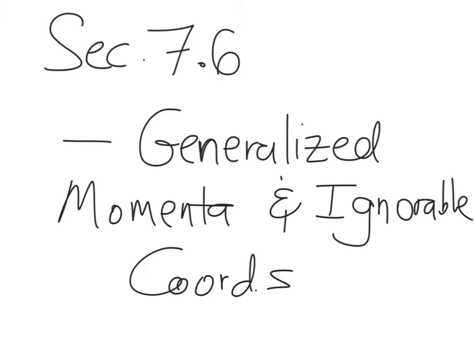In section 7.6, the book discusses generalized momenta and ignorable coordinates, and these are ideas that we've actually seen and discussed implicitly in class so far.